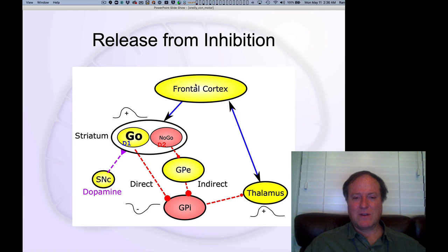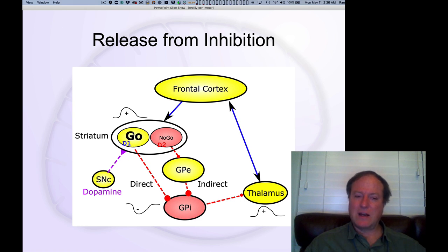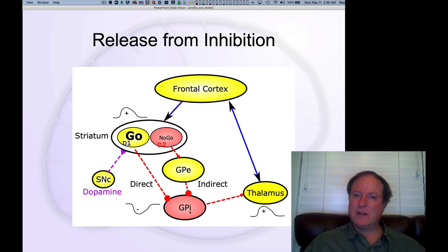The simple version of the story is you've got some plan up here in frontal cortex. It comes down and maybe it activates these 'go' neurons, which are otherwise known as the direct pathway. They're called direct because they directly inhibit neurons in the globus pallidus internal segment, GPi.